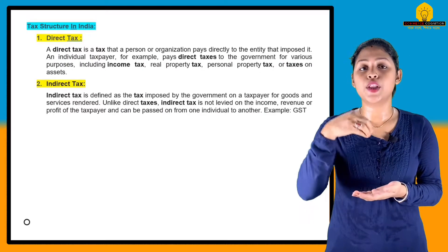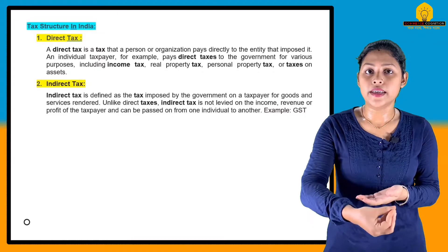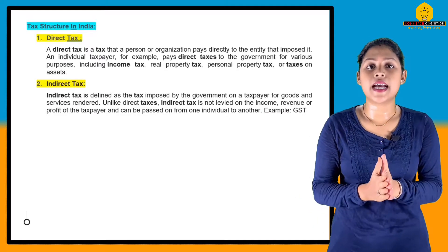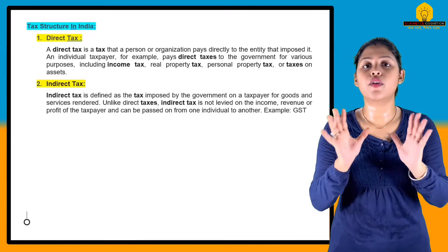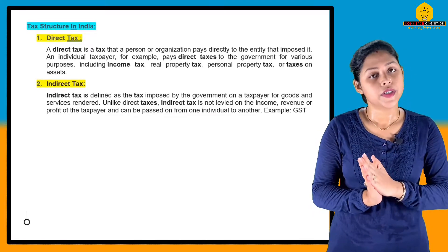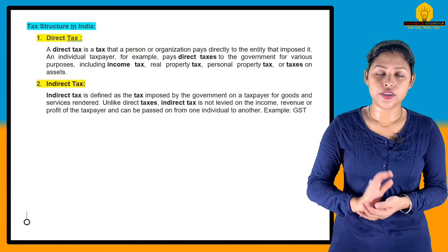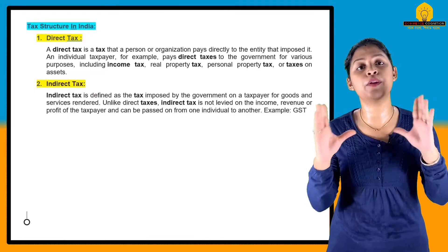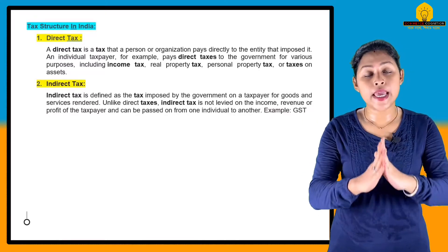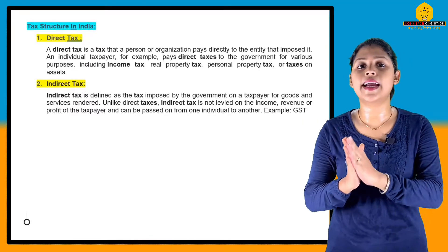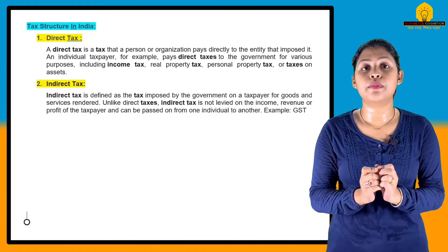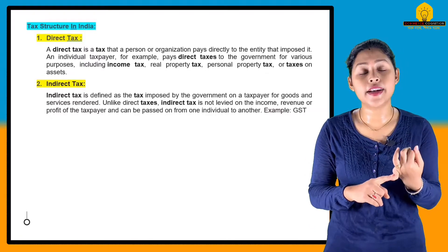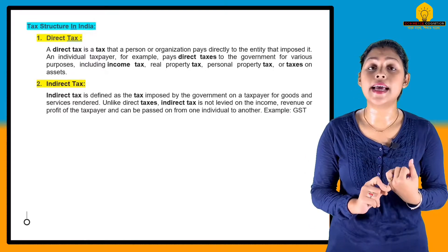If the tax burden on a common citizen is to be reduced, there are legal methods that can be applied. The government recognizes three categories for managing tax liability: one is tax planning, one is tax avoidance, and one is tax evasion.